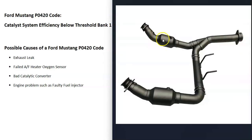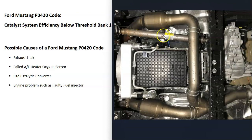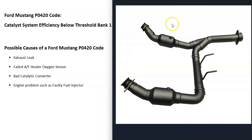There are going to be two sensors on each side: bank one sensor one, called the upstream sensor, which is before the catalytic converter, and bank one sensor two, which is right on or right after the catalytic converter. They can be hard to see up in there. I made a video on where these are located — I'll put a link down below. Be sure to test those O2 sensors.